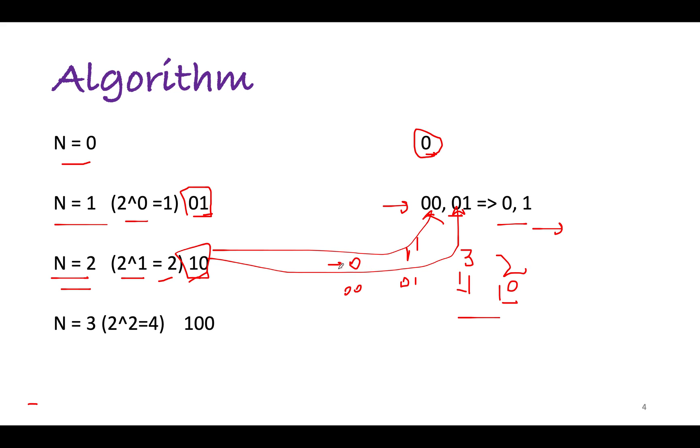So the answer for n equals 2 is 0, 1, 3, 2. And let's continue the process for the next iteration. This iteration n equals 3, and at n equals 3 we will multiply the previous number by 2. We get 2^2 which is 4, and its binary representation is something like this: 100.